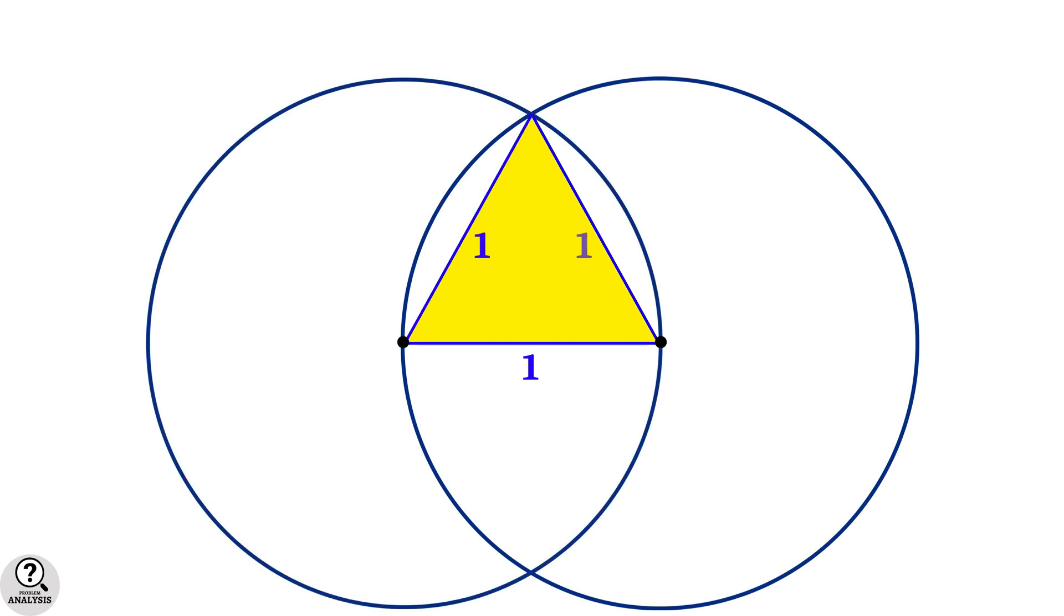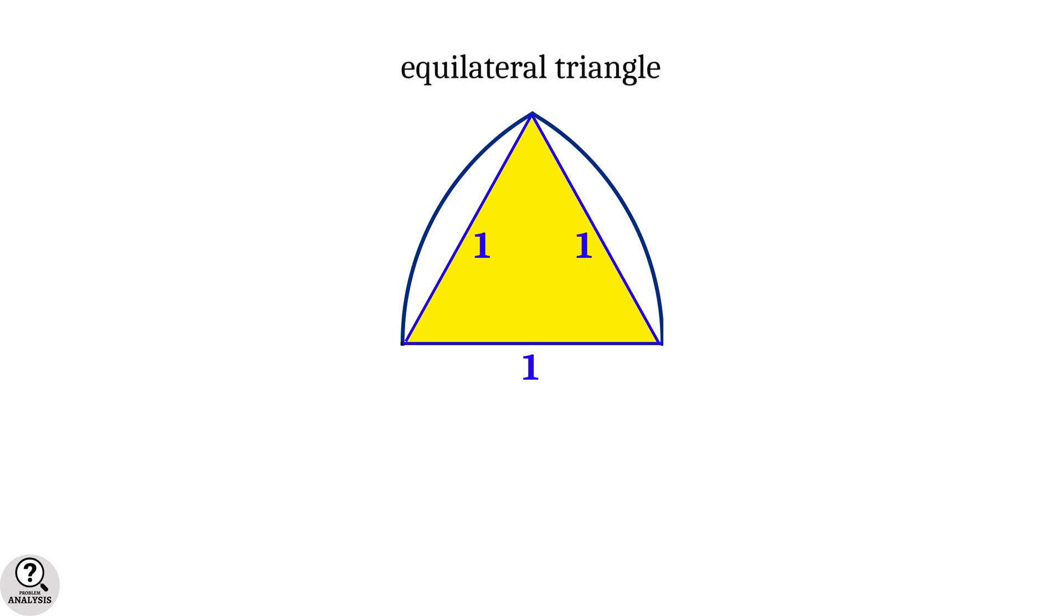So, all of them are equal to 1 unit. So, this yellow triangle should be an equilateral triangle.